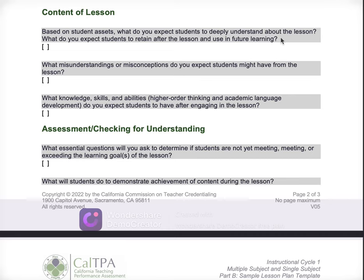Don't be fooled by the fact that this is a narrative and not a regular lesson plan. This narrative calls for you to specifically, in an in-depth way, give very specific evidence and answer each of these questions. When it says 'based on student assets,' I absolutely would be addressing the student assets portion in my answer here. I'm not going to gloss over this and just talk about what I expect students to do — I'm going to remind myself and the assessors what I know about student assets and how that's connected to this. So you need to answer every question in every prompt, specifically giving specific details and evidence in all of your answers.